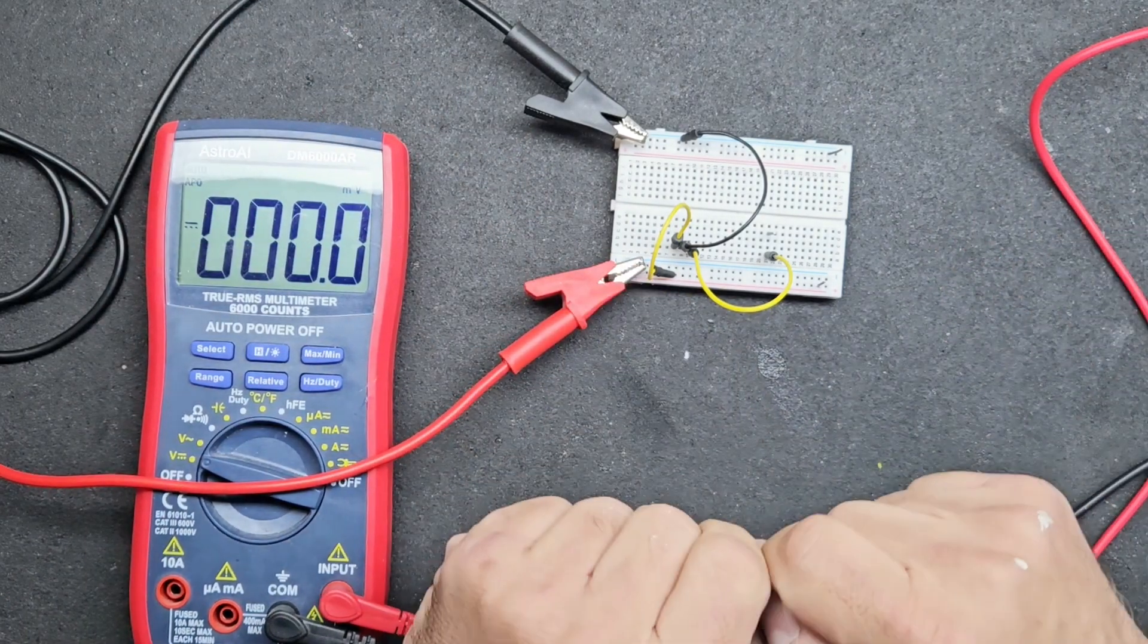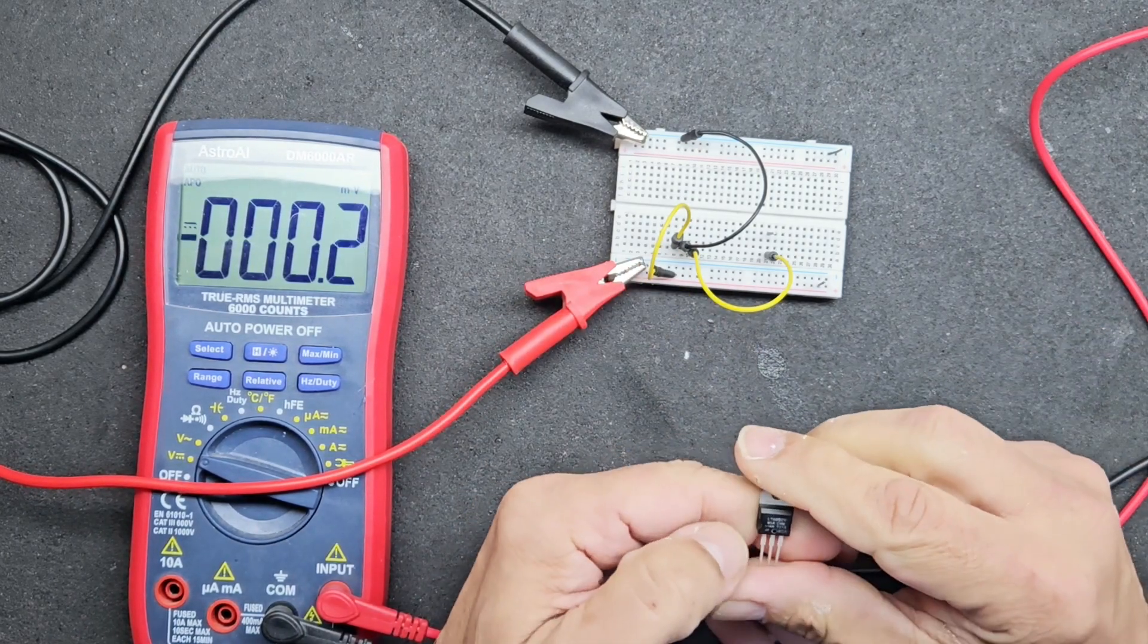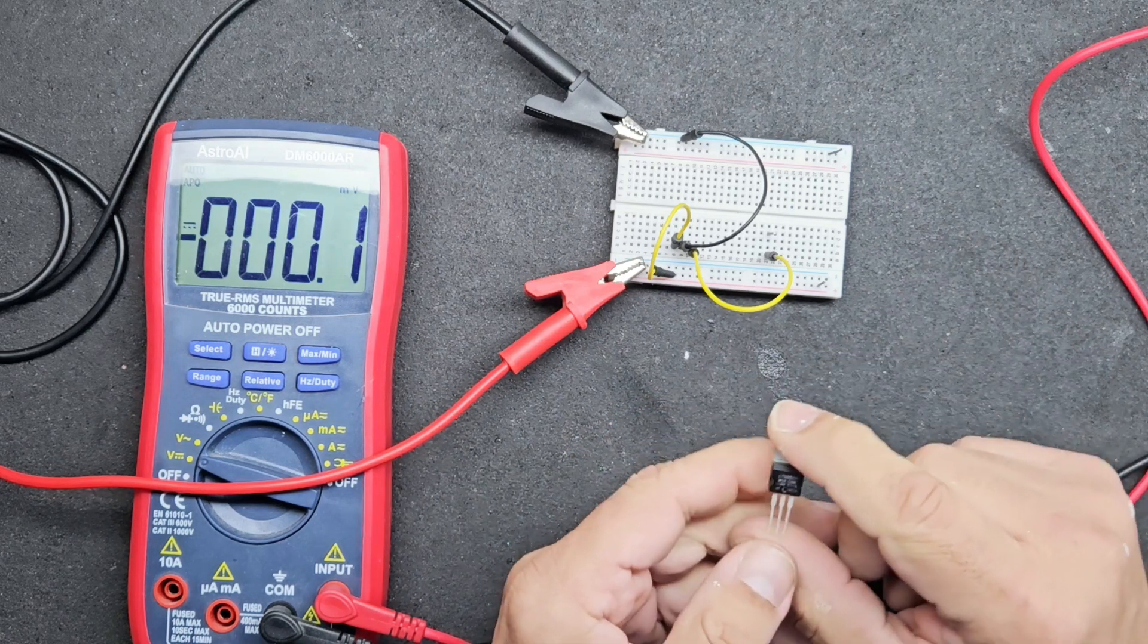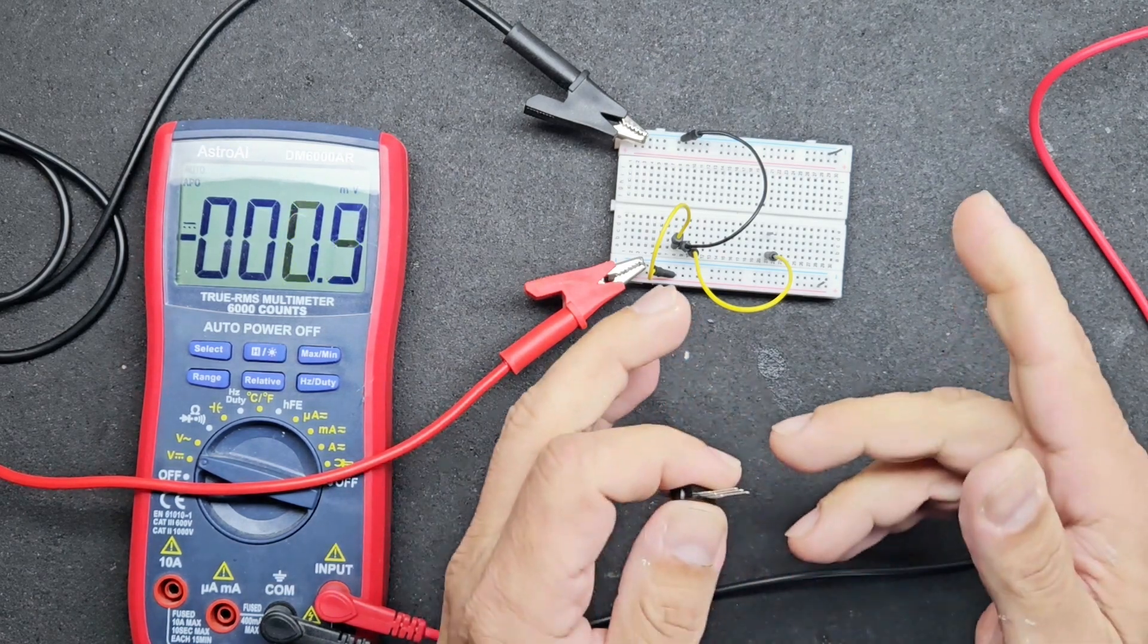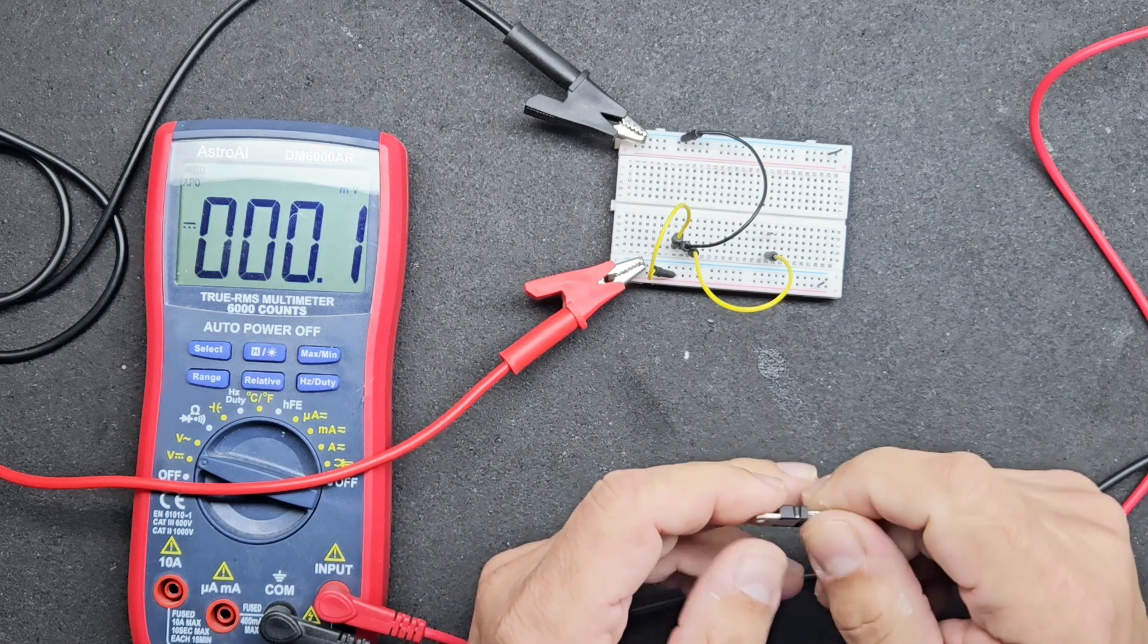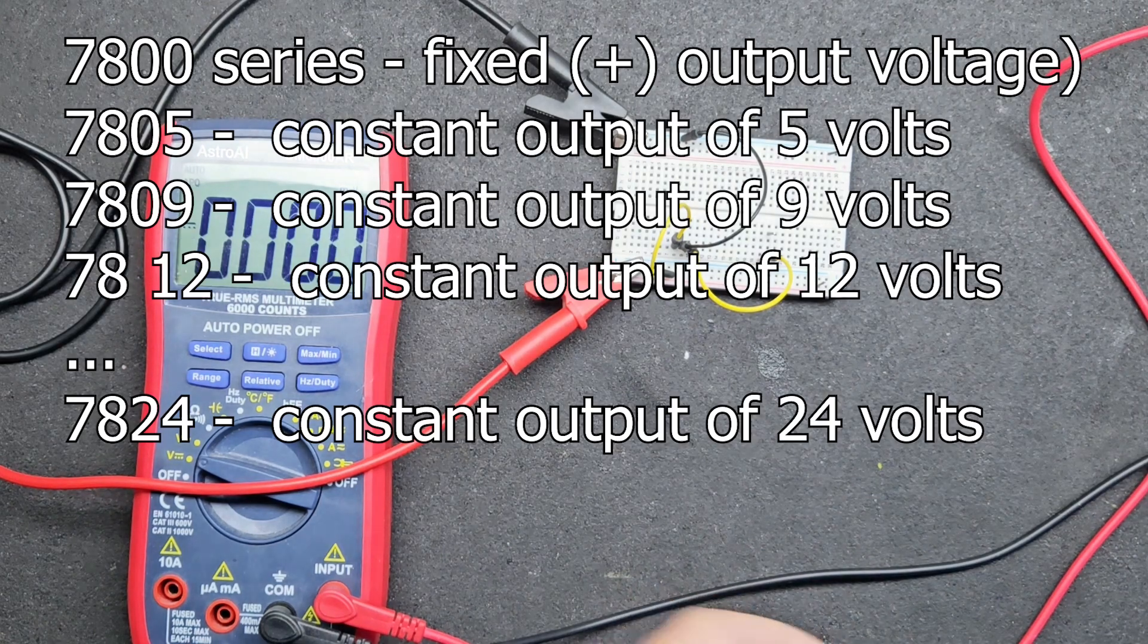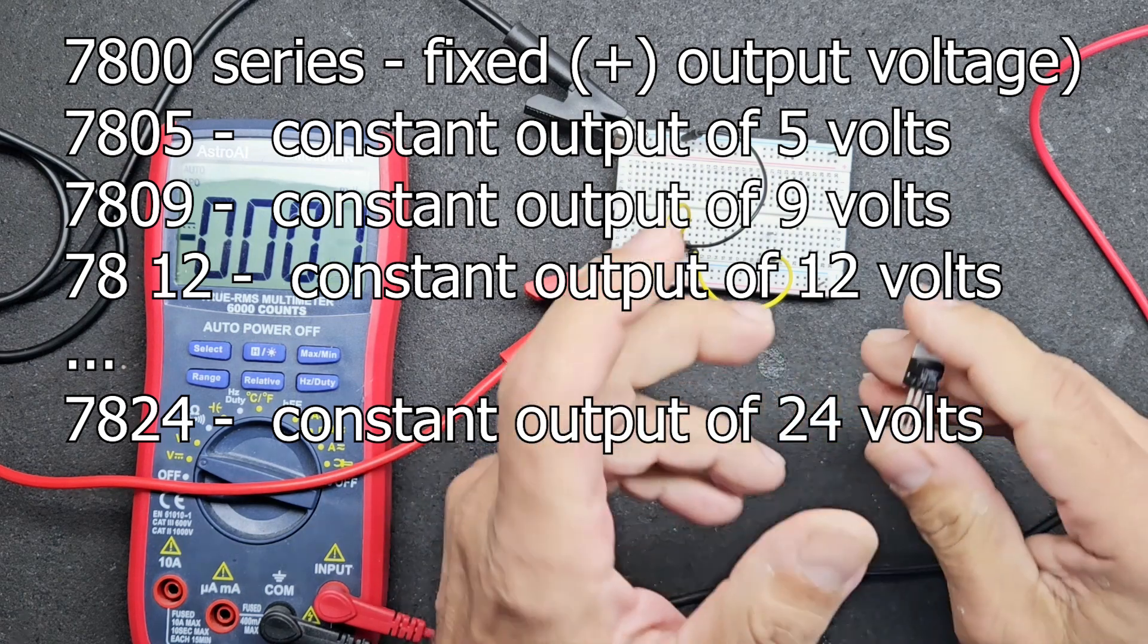The L7805C is a voltage regulator that's widely used to provide a stable 5 volt output voltage. It's a popular choice among hobbyists and electronics aficionados due to its simplicity and reliability. By the name, it's a 7800 series regulator, the most popular. The 7800 series produces a fixed positive output voltage versus the 7900 series which is negative output.